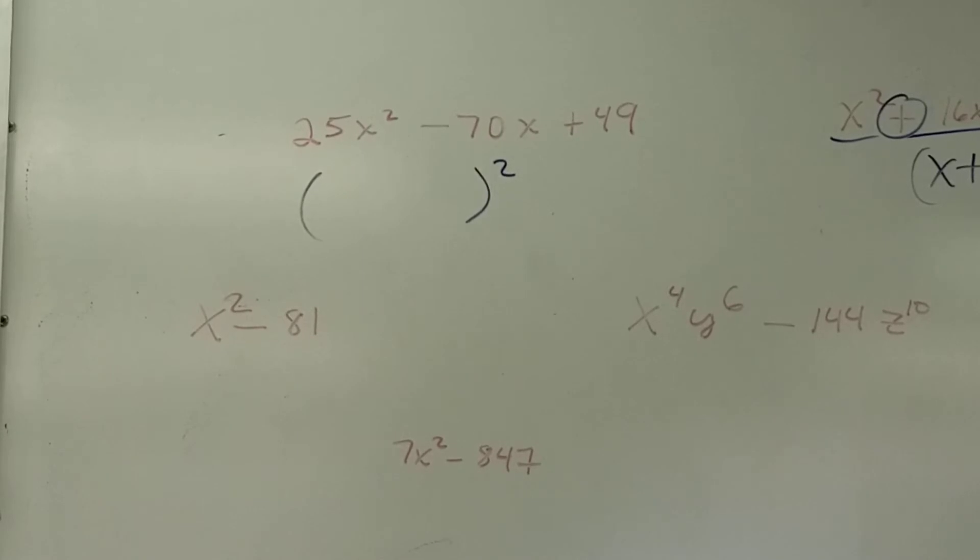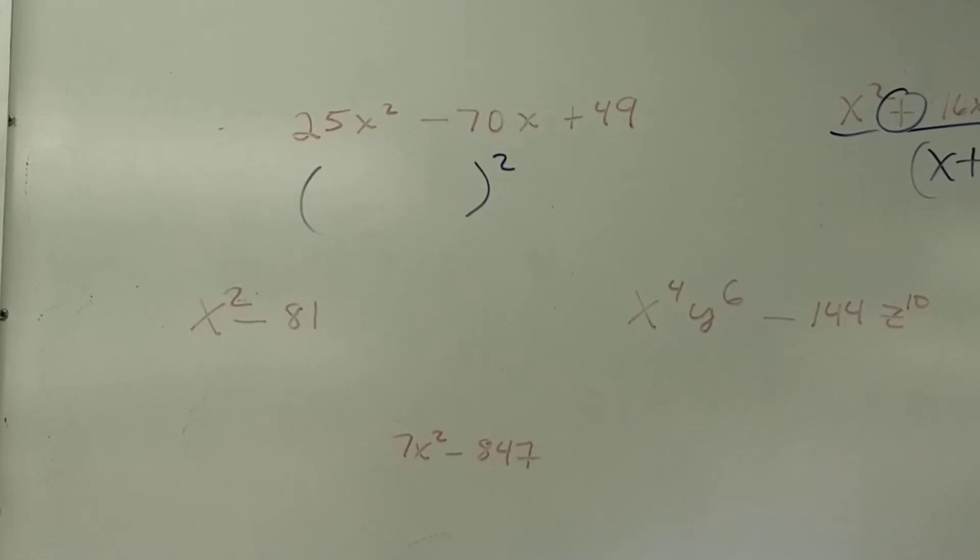What's the square root of 25? 5. What's the square root of 49? 7. What's 5 times 7? 35. Doubled. 70. Are we good? We're good.